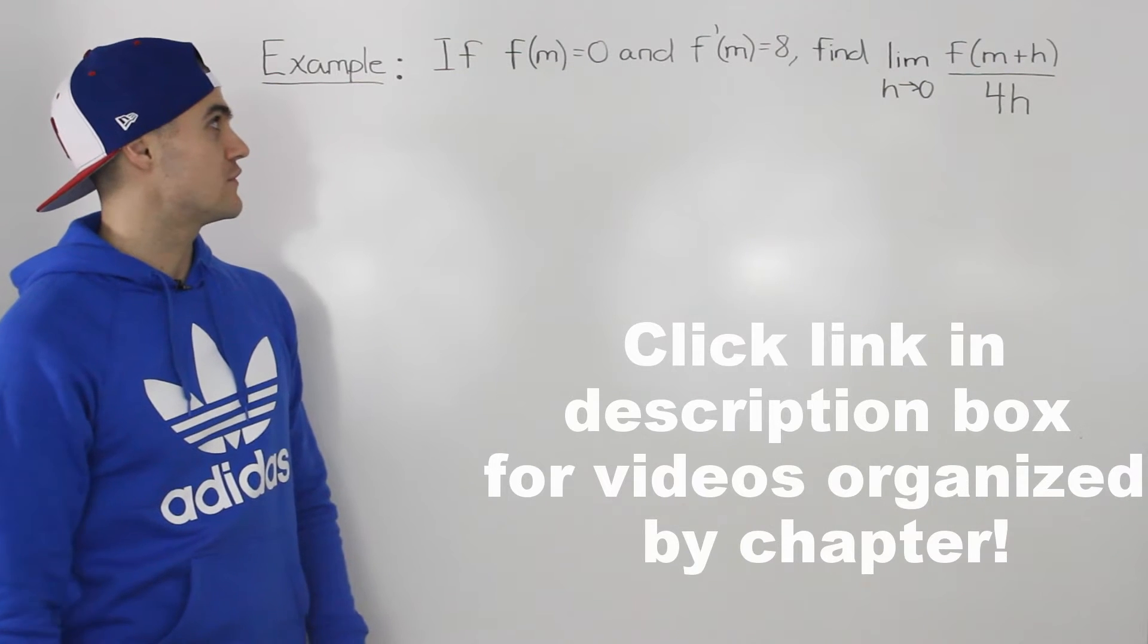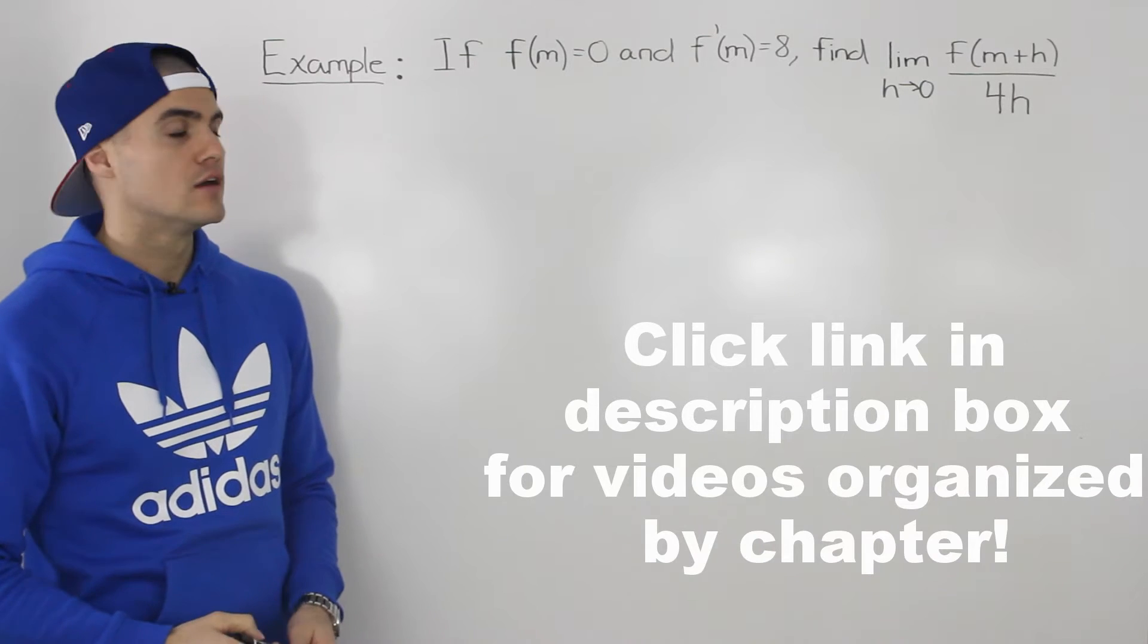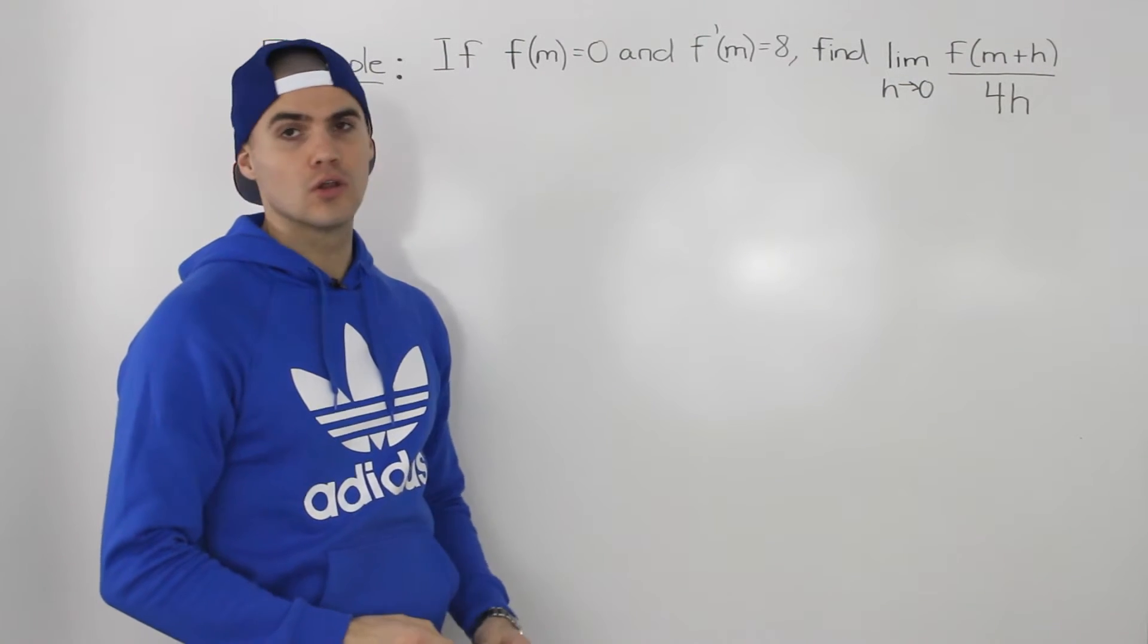Moving on to an example, if f of m is equal to 0 and f prime m is equal to 8, find the limit as h goes to 0 of f of m plus h all over 4h.